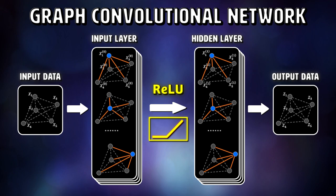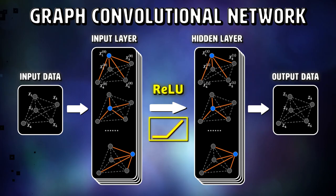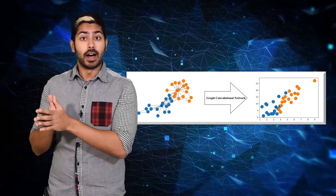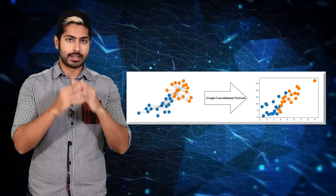This network is applied convolutionally across the entire graph, always receiving features from the relevant neighborhood around each node. Let's talk more about how these graph convolutions are defined by applying a GCN to a real-world graph.